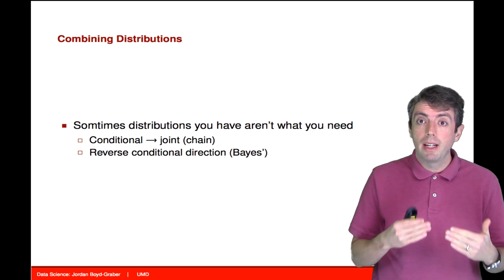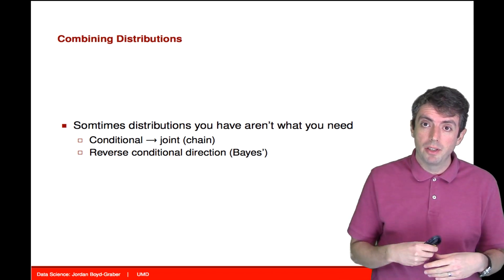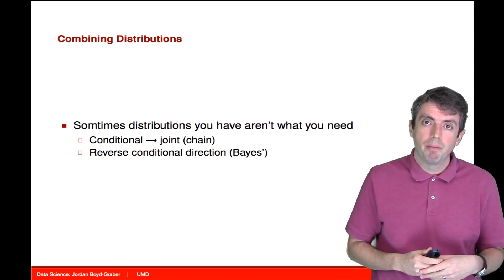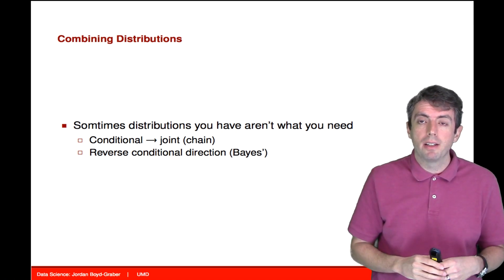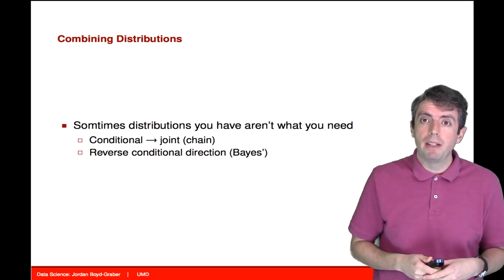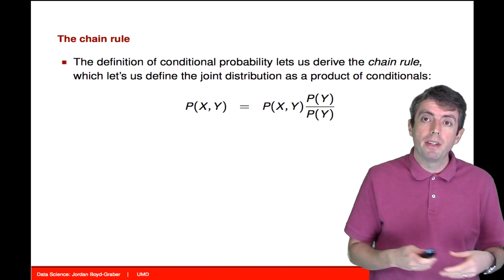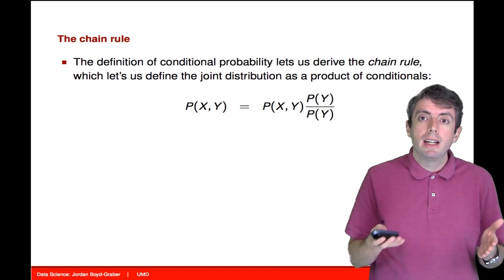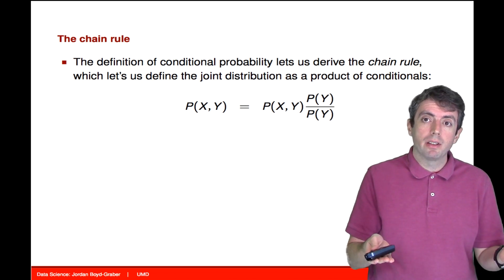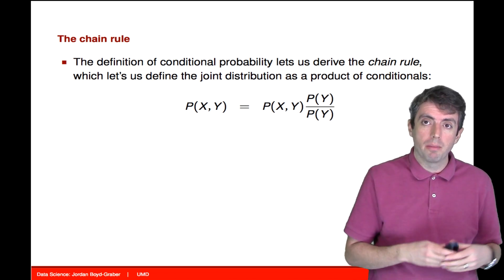Sometimes you need to turn a conditional distribution into a joint distribution. For that, we'll use the chain rule. And sometimes you need to flip the order of the conditionality. For that, we'll use Bayes' rule. The definition of conditional probability lets us derive what's called the chain rule. The chain rule is what allows us to turn conditional probabilities into joint probabilities.